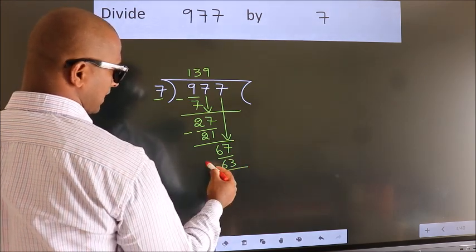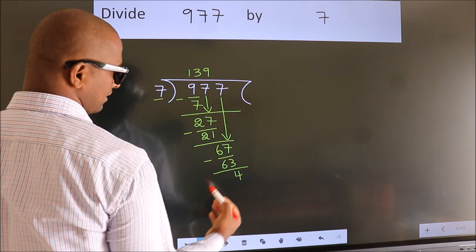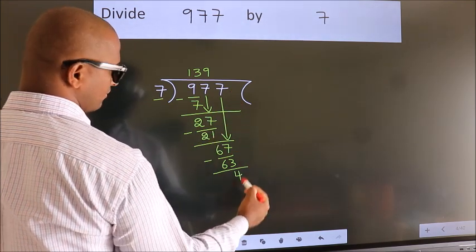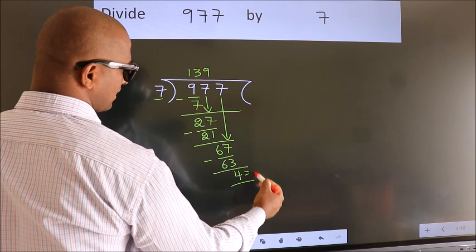Now we subtract. We get 4. No more numbers to bring down. So we stop here. This is our remainder.